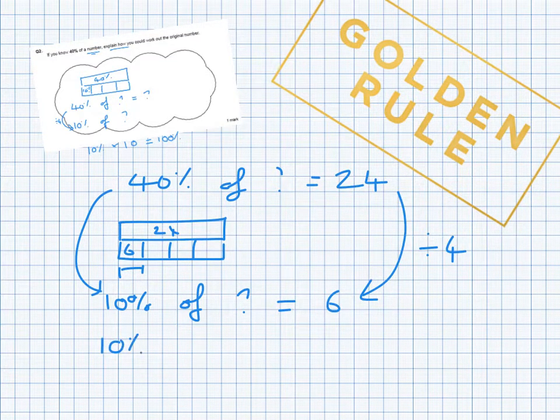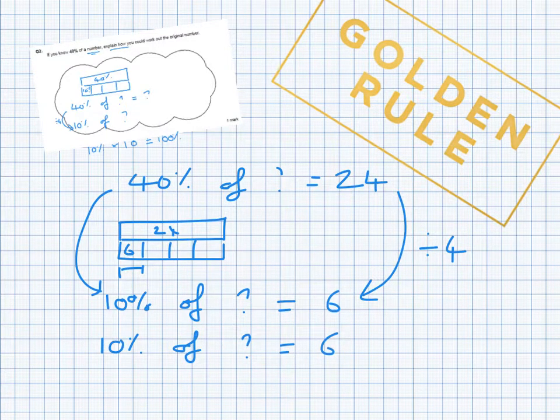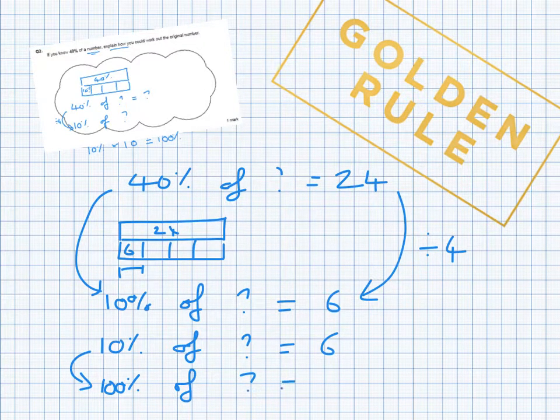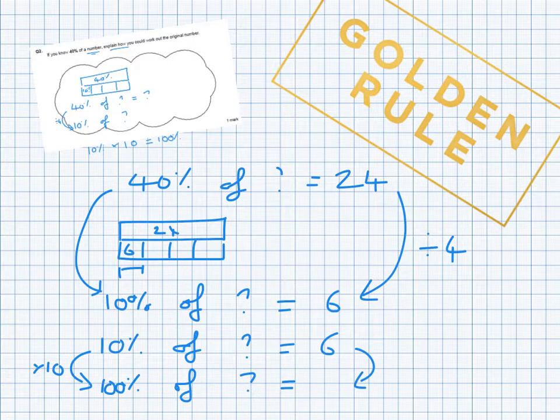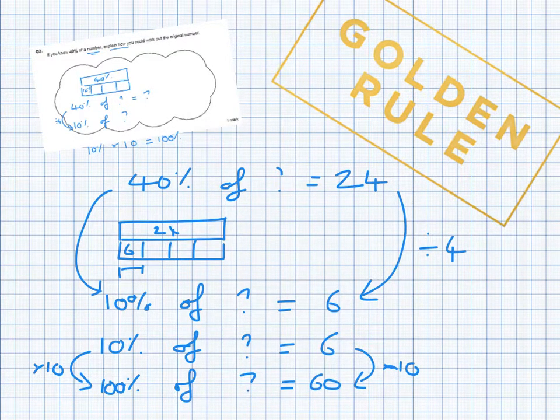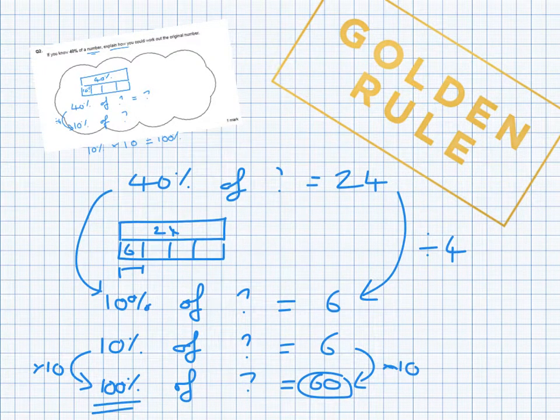Now I know 10% of my number is 6. I want 100% of my number. So 10% times by 10 is 100%. So I multiply my 6 by 10 as well. So 6 times by 10 is 60. So what was my number? The number I started with was 60. Because 100% of something is 60. So 100% is all of it. So that's how I would find out the original number if I knew 40% of a number.